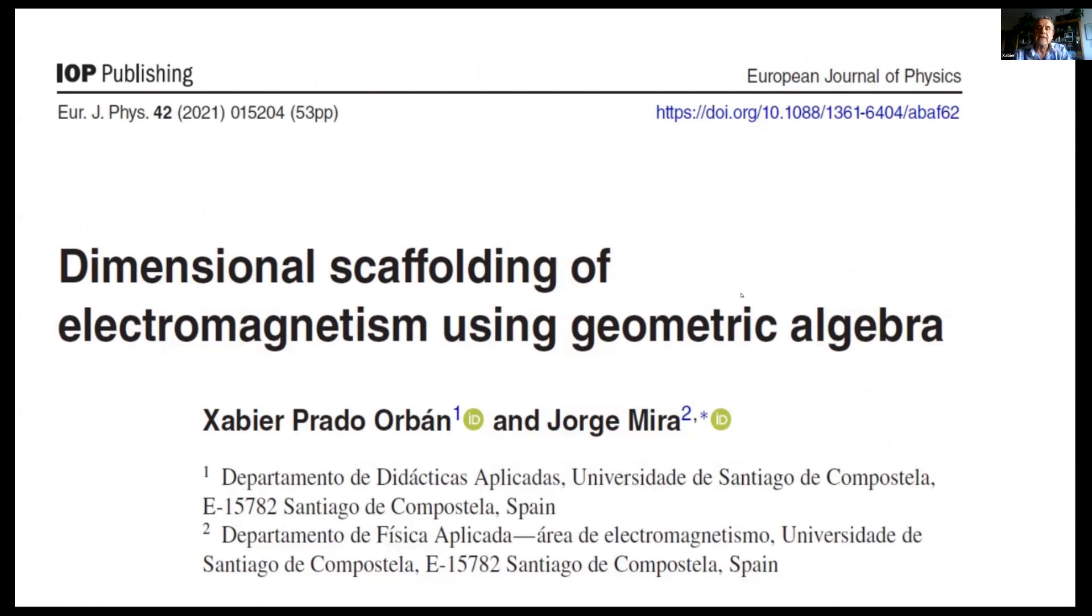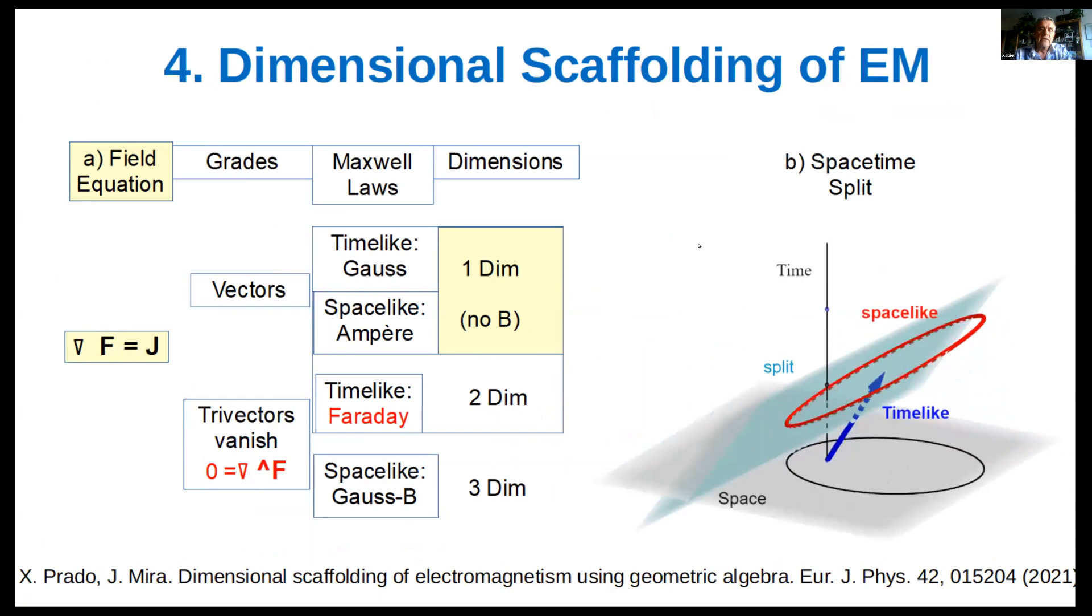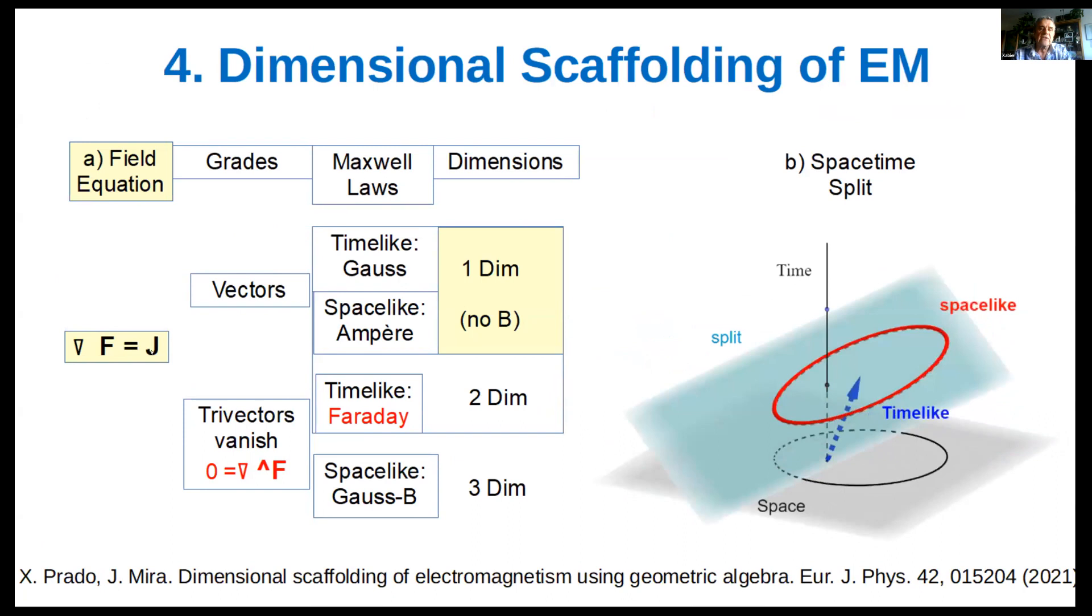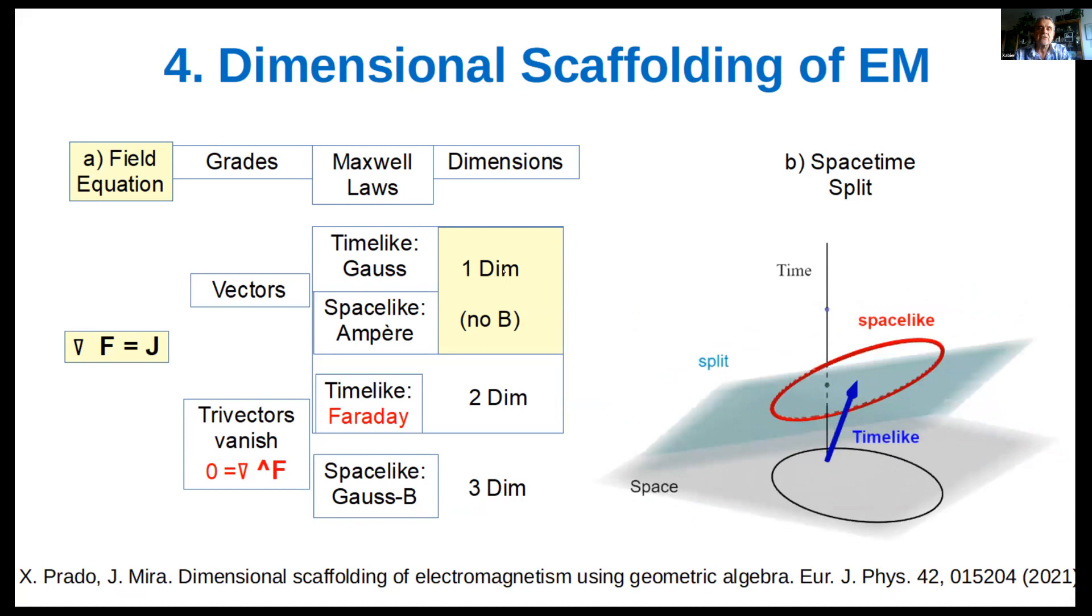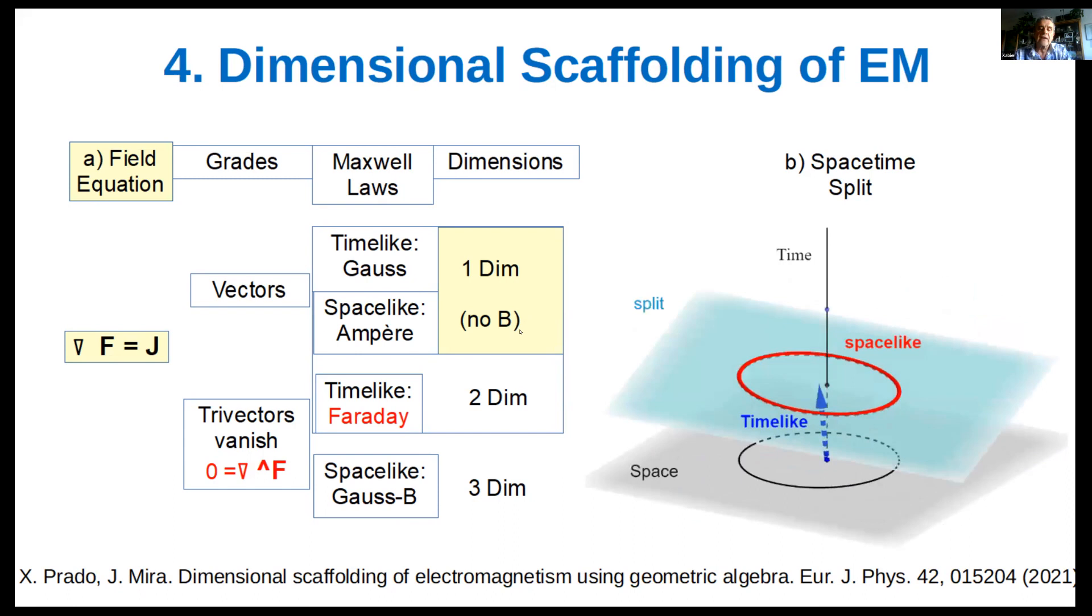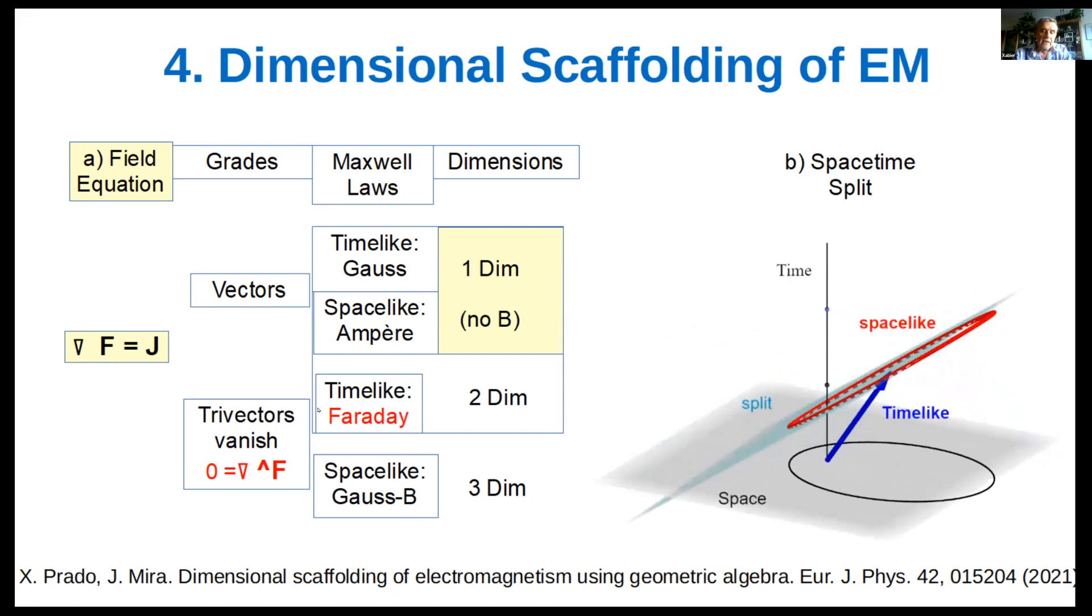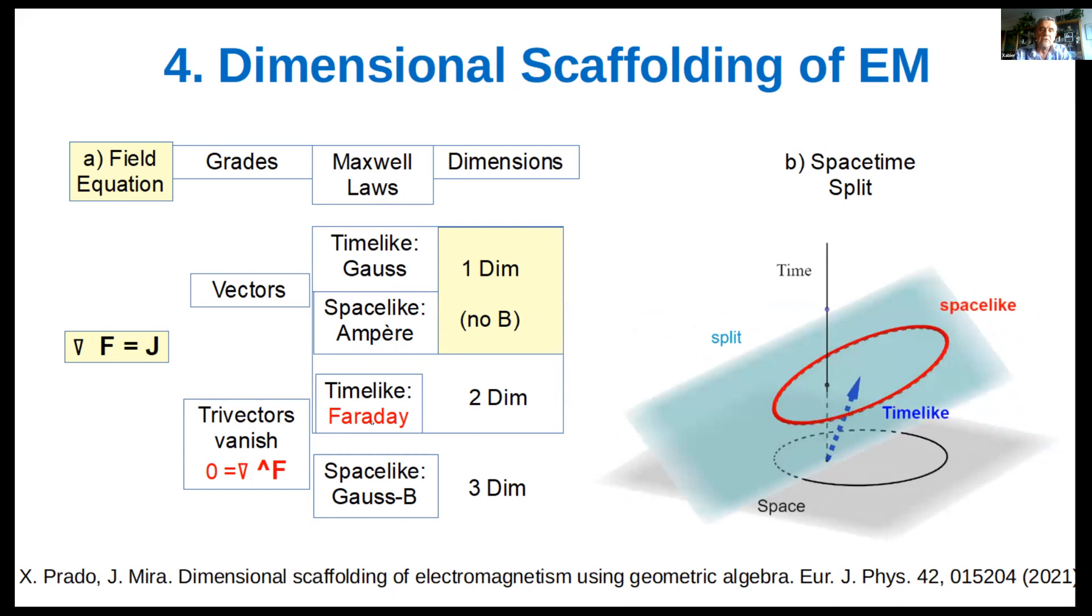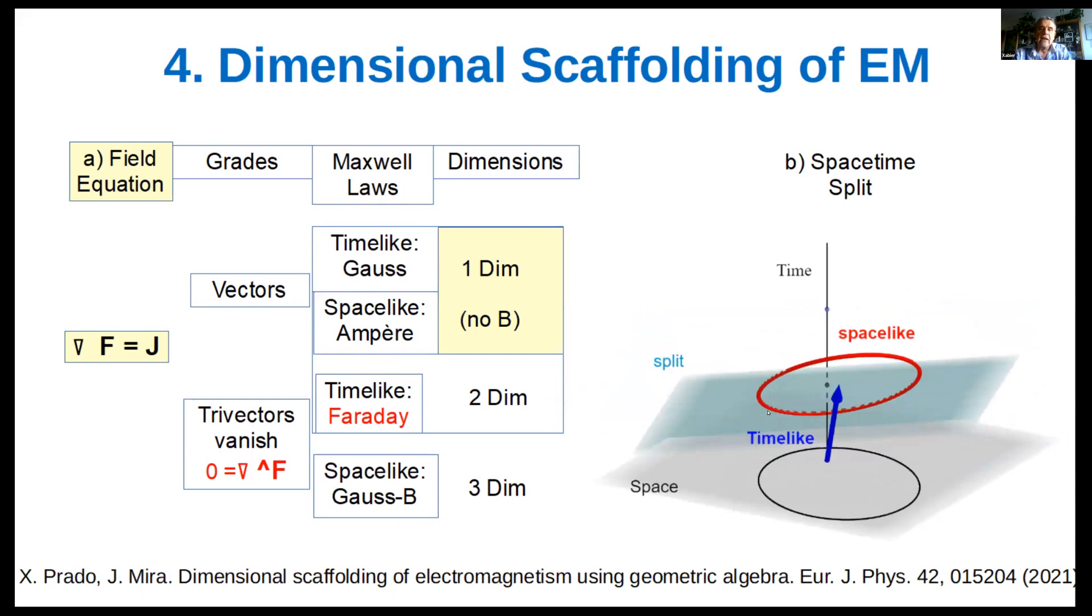Maxwell's laws fit into a single expression using geometric calculus, where the vector derivative of the bivector electromagnetic field F equals the charge current vector J. In one dimension, this gives rise to the laws of Gauss and Ampere, acting only over electric fields since magnetic field does not exist in one dimension. In two dimensions, the magnetic field appears as a bivector or pseudoscalar, and Faraday's law emerges.